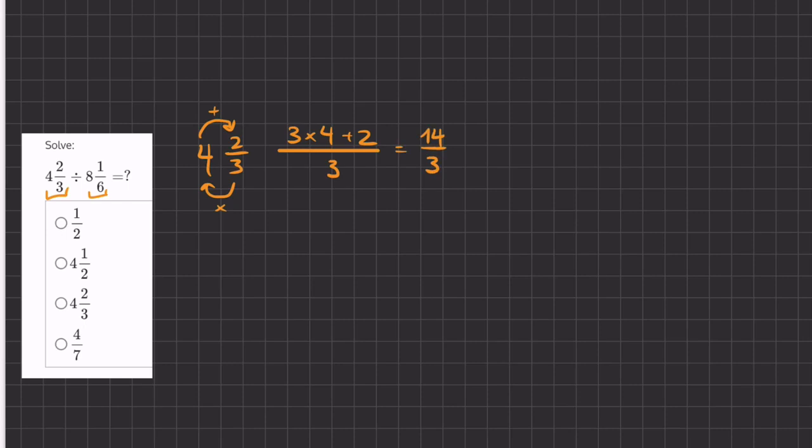We'll do this for our second improper fraction, or mixed number. So we have, we're going to multiply this and add this. Okay, so we're going to have 6 times 8 plus 1, all over 6. So we're going to have 48, 6 times 8 plus 1, 49, all over 6.